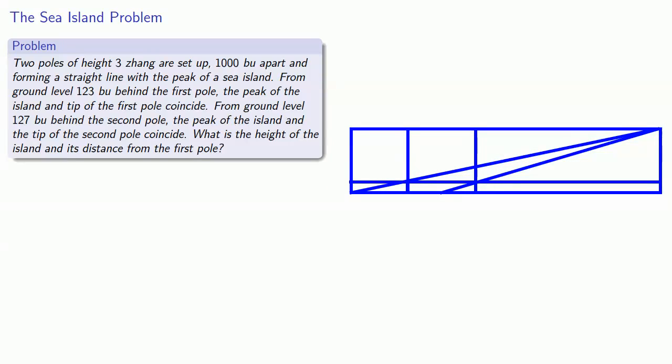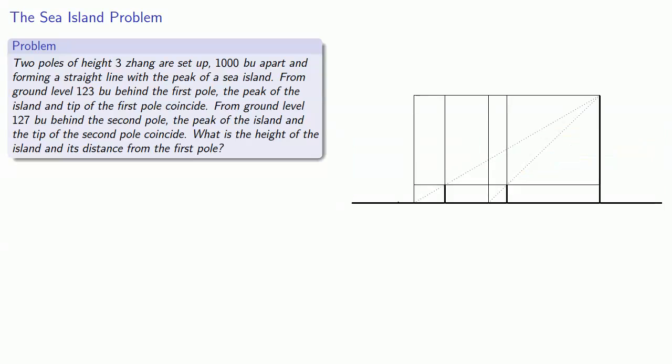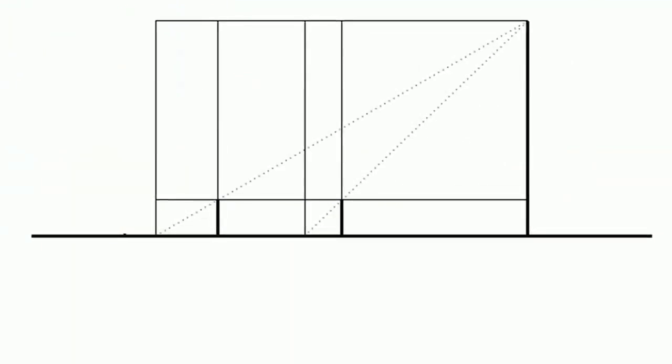So remember we know the height of the poles, the distance apart, and how far behind the pole the sight line reaches the ground. Now to try and avoid squashing all of that into a little space, we'll redraw our picture, not to scale. And if we do that, we'll get something like this. So remember the poles are 1000 bu apart, they're 3 zhang high, and the sight line falls 123 bu behind the first pole and 127 bu behind the second pole.